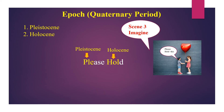Next is how to remember the epochs in Quaternary period in correct order: Pleistocene and Holocene. Imagine scene three: a boy is giving his balloon to a girl and saying, Please hold it. The sentence is: Please hold. From please, remember Pleistocene. From hold, remember Holocene. The sentence is: Please hold, for Pleistocene and Holocene.